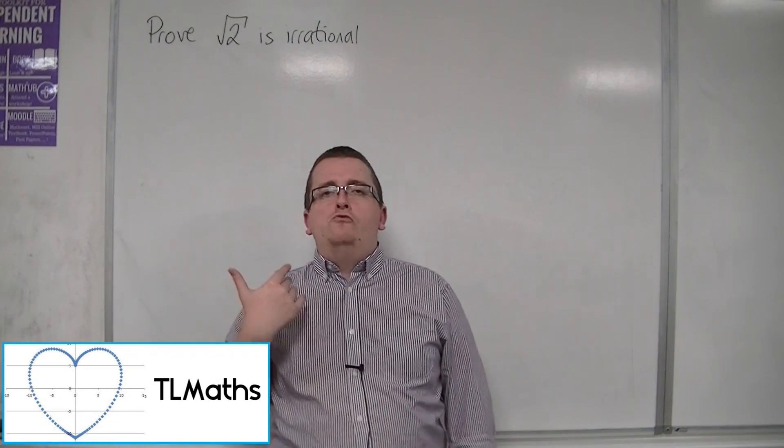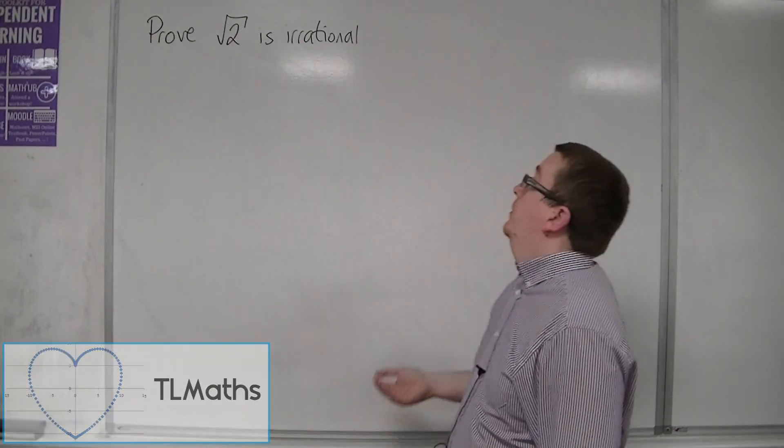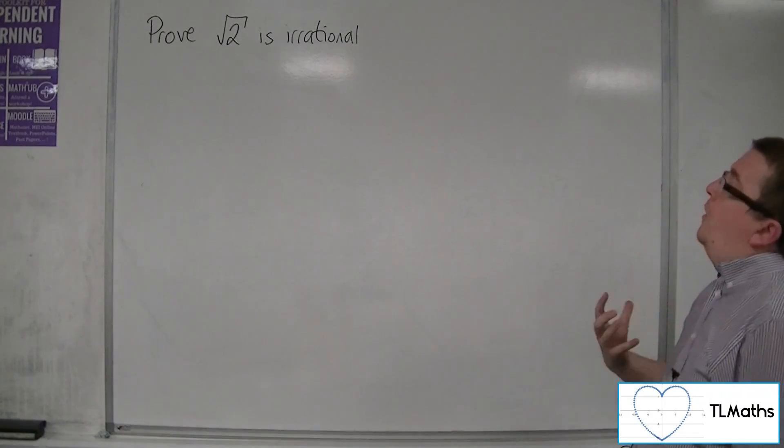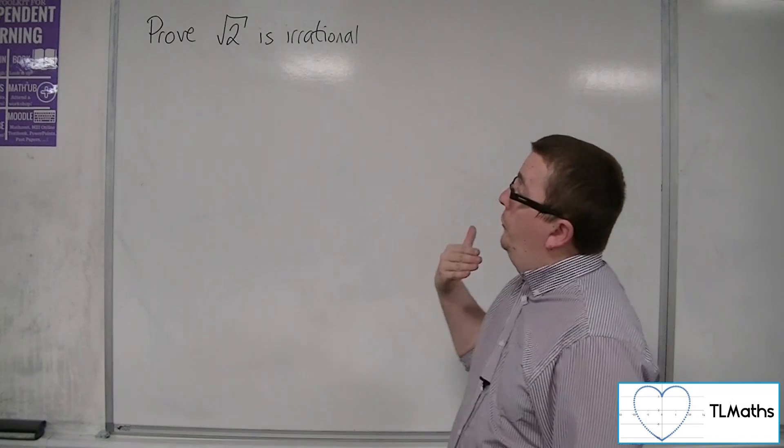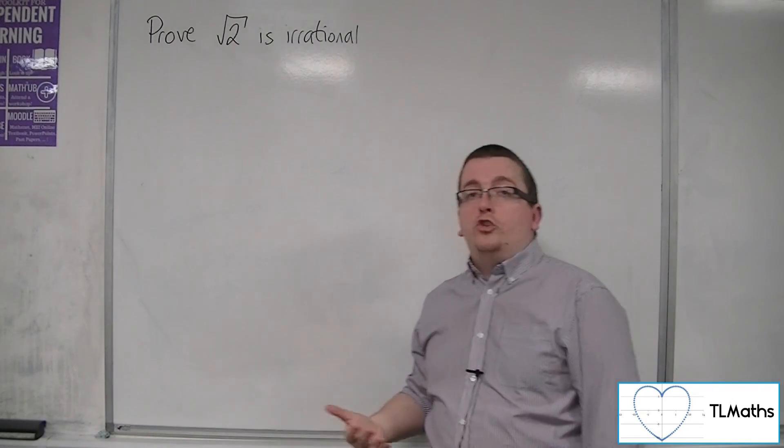Okay, proving root 2 is irrational is quite a well-known proof, and it is one of the examples of proof by contradiction.